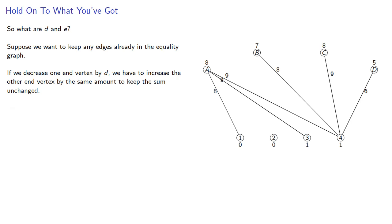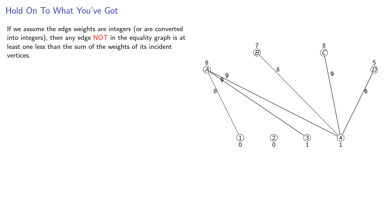So we need d equal to e. Now, if we assume the edge weights are integers or are converted to integers, then any edge not already in the equality graph is at least one less than the sum of the weights of its incident vertices.